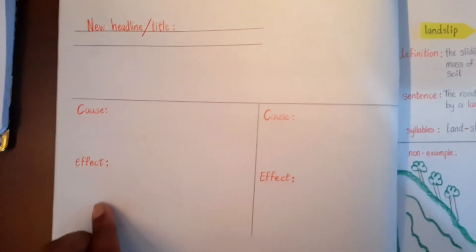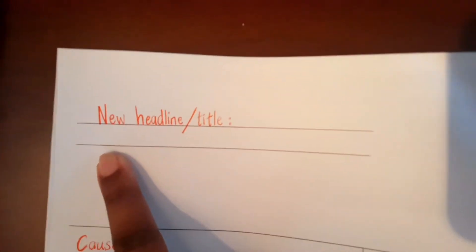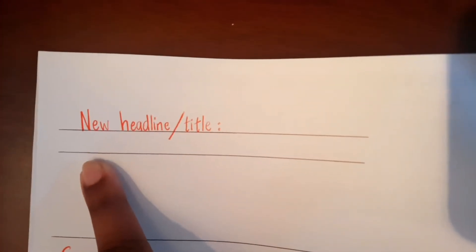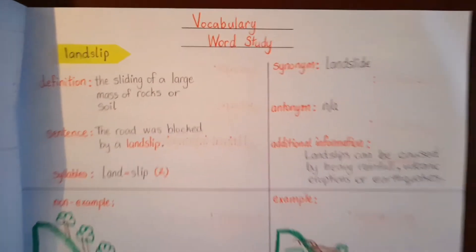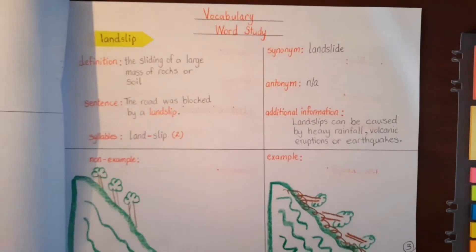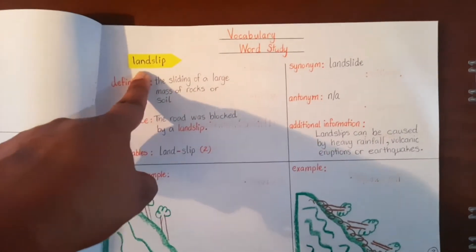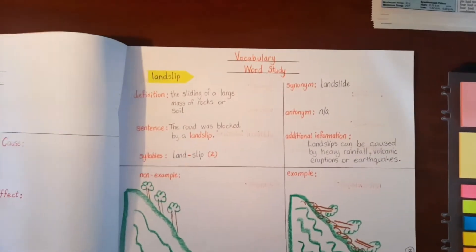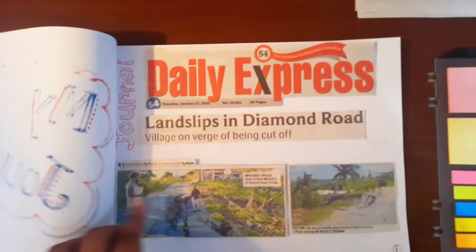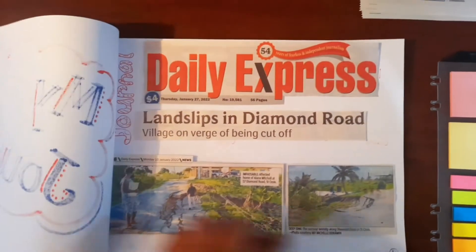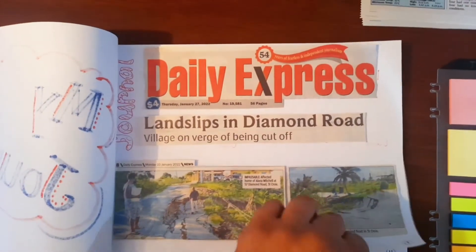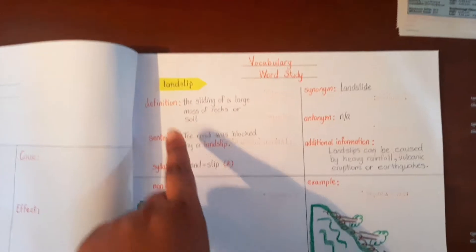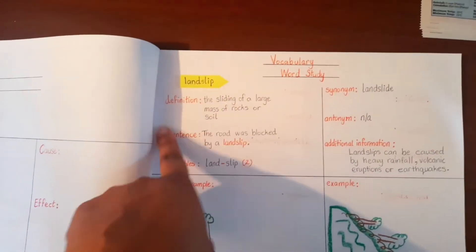In this example, the skill we looked at was cause and effect. Of course, they have to change and reword the title. Here is an example of the word study. The word that they choose to complete their word study on has to be a word that is relevant to the article itself. So you see: landslips in Diamond Road. The word that I pulled out was landslip.